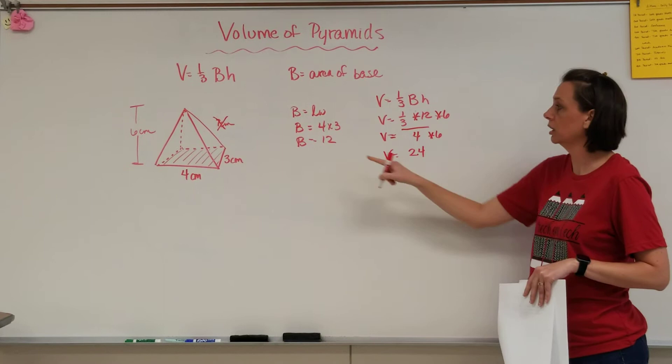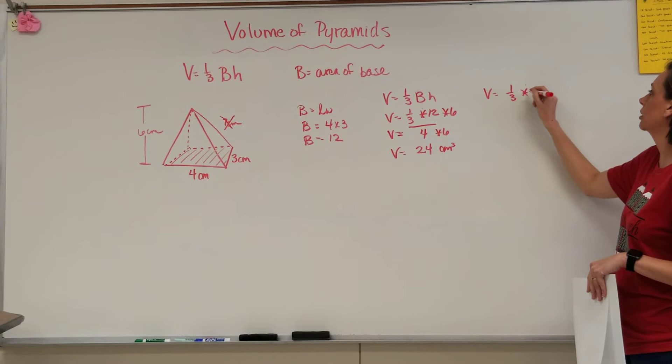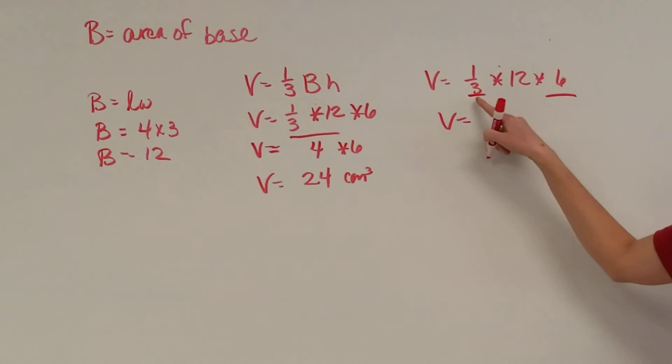showing that taking one-third of either number would work. Because in this case, I could also easily have taken one-third of the 6. If I had done that, then I could have said volume is one-third of 6. 6 divided by 3 would have been 2 times this 12, and I still would have had the volume of 24.